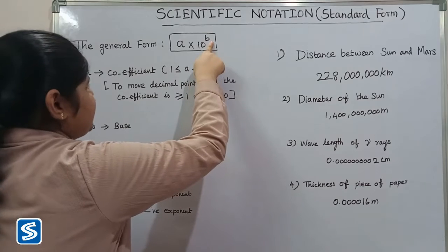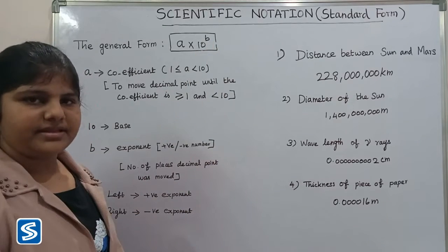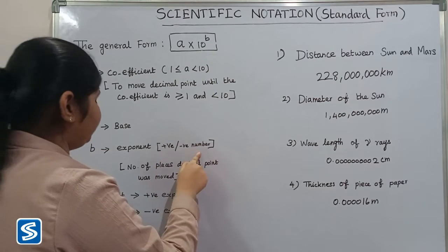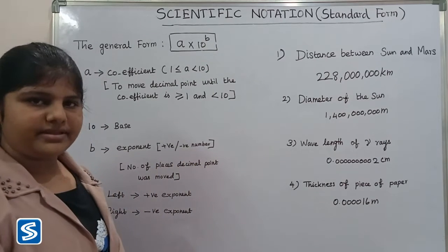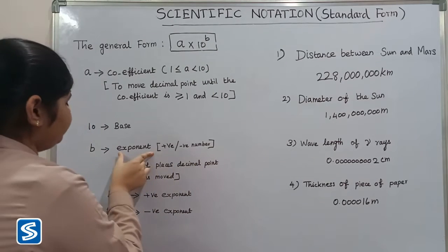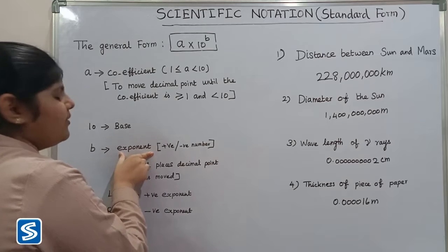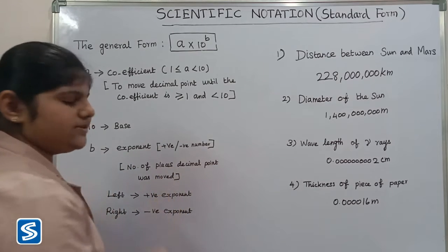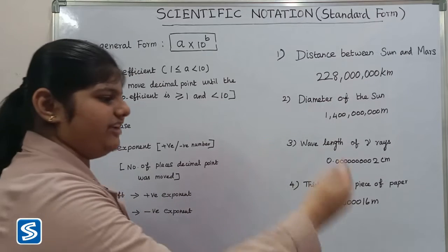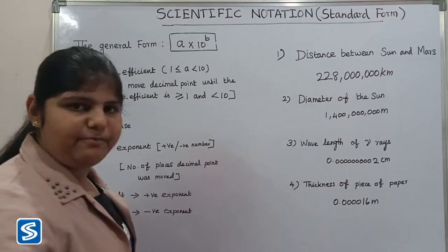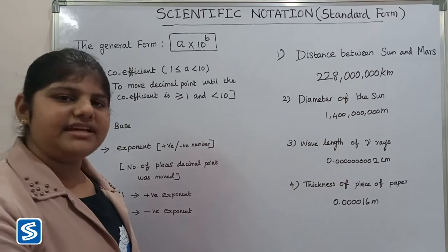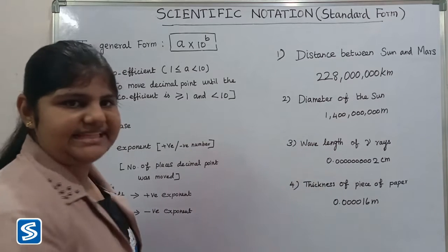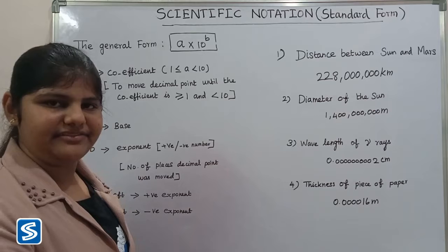Here, b is the exponent. The exponent is an integer — it can be a positive or negative number. To find the value of the exponent, we count how many places the decimal point was moved. If we move the decimal point to the left, the exponent will be positive. If we move the decimal point to the right, the exponent will be negative.